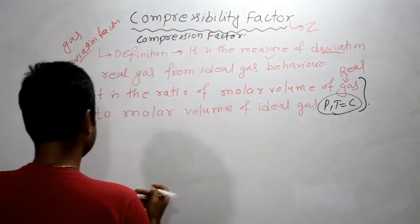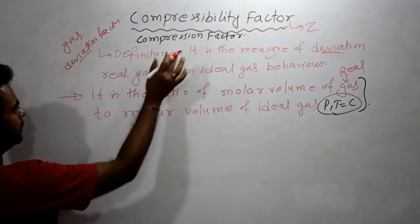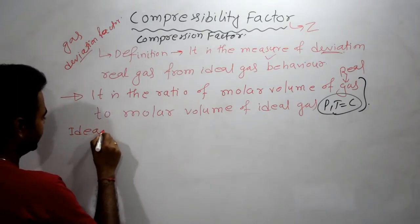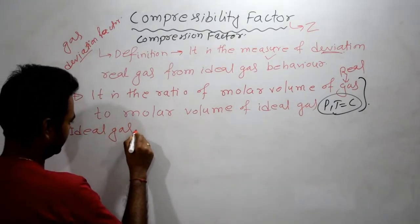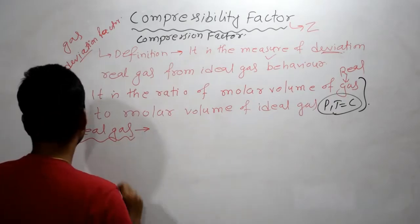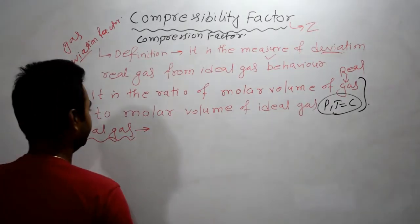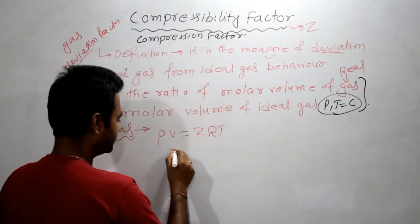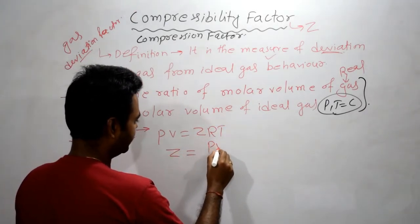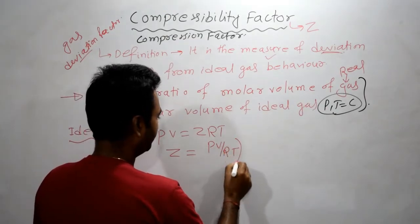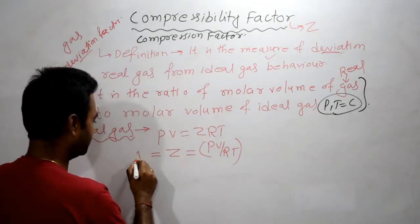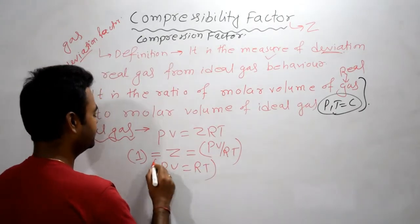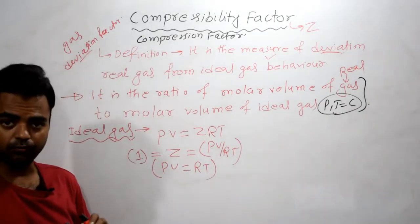Now, let's talk about what will be compressibility factor for ideal gas. For ideal gas, we have equation PV is equal to ZRT. And this Z is compressibility factor, PV by RT. And for ideal gas, Z is equal to one. That means PV is equal to RT.